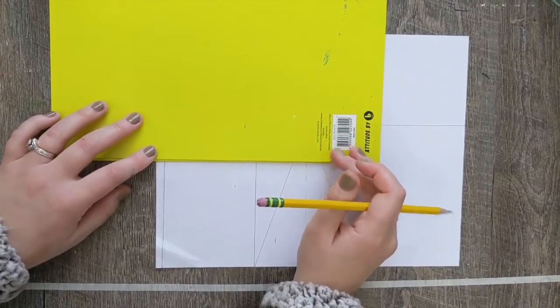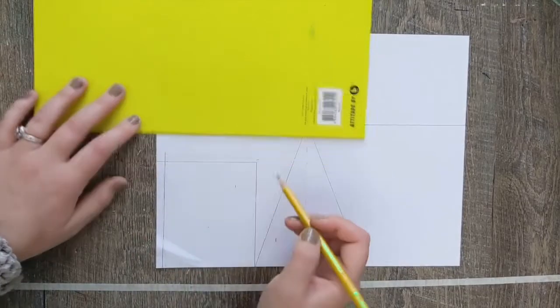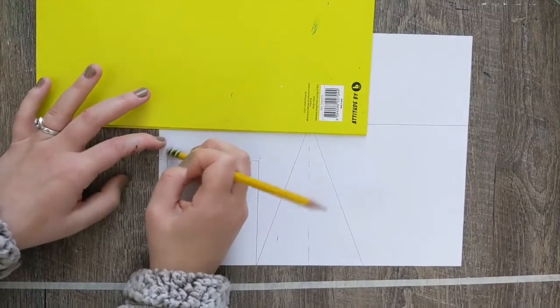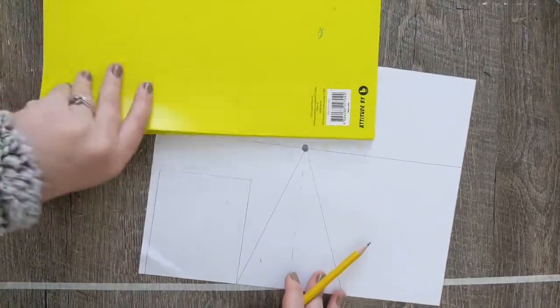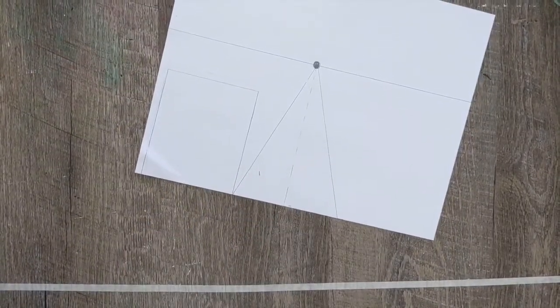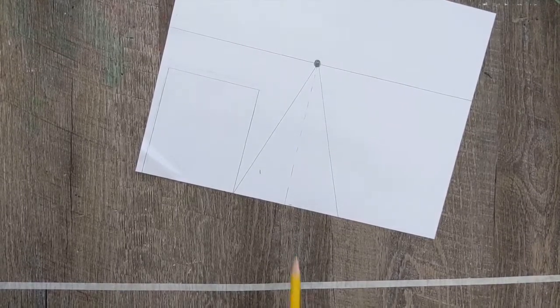Something really, really important to remember is that you need to draw light. Draw light, light, light. That way you can erase. Drawing with perspective, this is one point perspective, takes a lot of erasing.